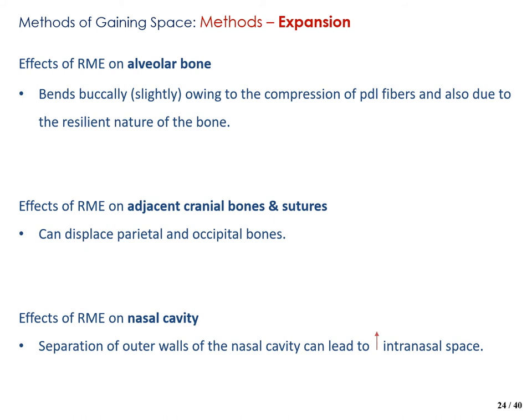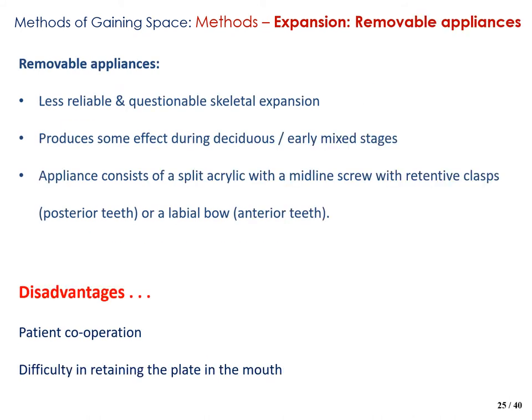Adjacent cranial bones and sutures — the parietal and occipital bones are known to displace. The effect on the nasal cavity is separation of the outer walls, leading to increased intranasal space. For performing RME, removable appliances can be used; however, they are less reliable and produce questionable skeletal expansion, with some effect only during the early mixed dentition stage. The appliance consists of an acrylic plate split at the midline with a midline screw and retentive clasps on posterior teeth or a labial bow on anterior teeth. Disadvantages include the need for patient cooperation and difficulty retaining the plate.